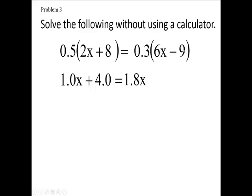And 3 times 9 is 27 with one decimal place, so minus 2.7. Now we have to choose whether to get rid of the 1.0x or the 1.8x, so we pick the smaller of the two. We're going to get rid of the 1.0x.